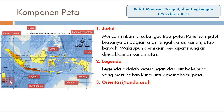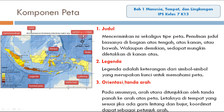Yang ketiga, orientasi atau arah mata angin. Pada umumnya arah utara ditunjukkan oleh tanda panah ke atas. Letaknya di tempat yang sesuai. Jika ada garis lintang dan bujur, koordinat dapat sebagai petunjuk arah. Ini adalah lambang orientasi atau arah mata angin.